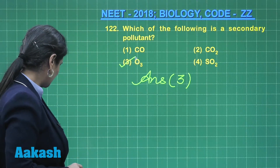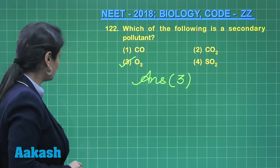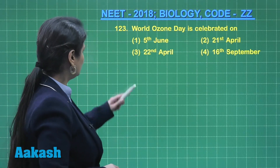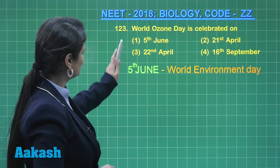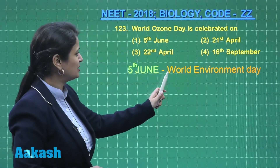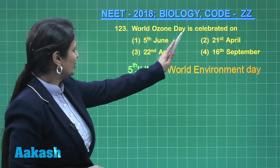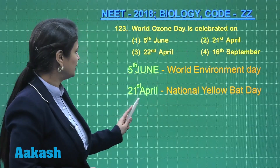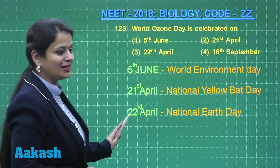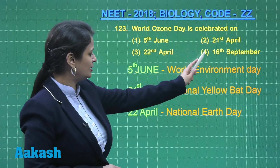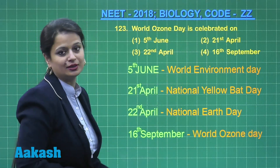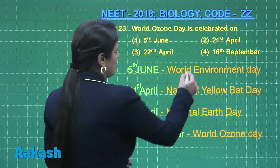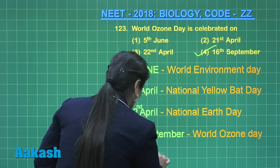Now let's move on to question number 123: World Ozone Day is celebrated on? 5th June is World Environment Day. 21st April is National Yellow Bat Day. 22nd April is National Earth Day. And 16th September is World Ozone Day. So the right answer for this question is option number 4.